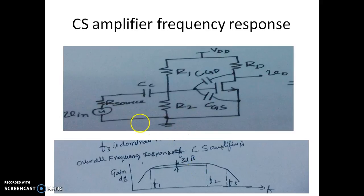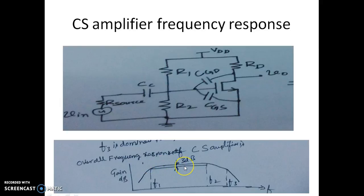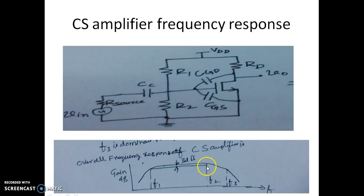Now let us look at the overall frequency response of the CS amplifier. At lower frequencies it looks like a high-pass filter. In the mid-band frequencies the gain is almost constant — the effective capacitance is not felt at frequencies from 10 kHz up to about 100 or 200 kHz. Above mid-band, there is a cutoff frequency due to R_source and Cin, and one more cutoff frequency due to C2 and Rd. This gives us the overall frequency response of the CS amplifier.